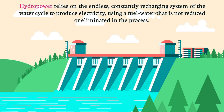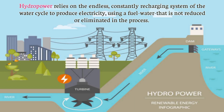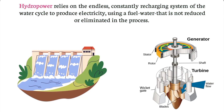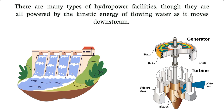Hydropower relies on the endless, constantly recharging system of the water cycle to produce electricity using a fuel — water — that is not reduced or eliminated in the process.